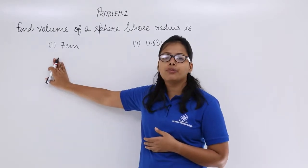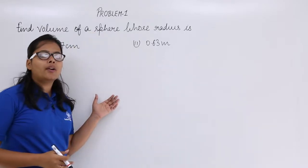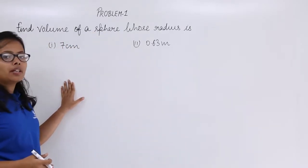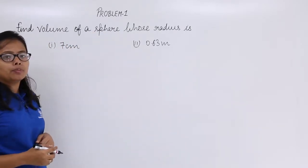So let's calculate for the first part. As you know that radius is 7 centimeter. So what will be the volume? Let's see.